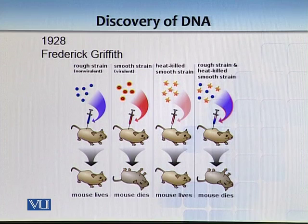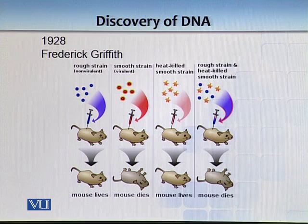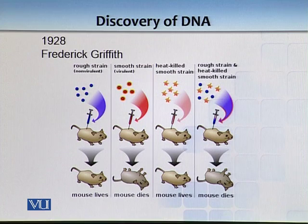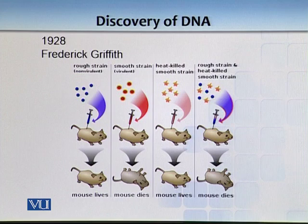But here is the very interesting result: when a rough strain and a heat-killed smooth strain were mixed together, the mouse died. So when each strain alone did not kill the mouse, mixing them together caused death. The hypothesis was that something had been transferred from the heat-killed smooth strain to the rough strain, which ultimately made the rough strain virulent as well. And that something, as we now know, was DNA, which ultimately transformed the rough strain.